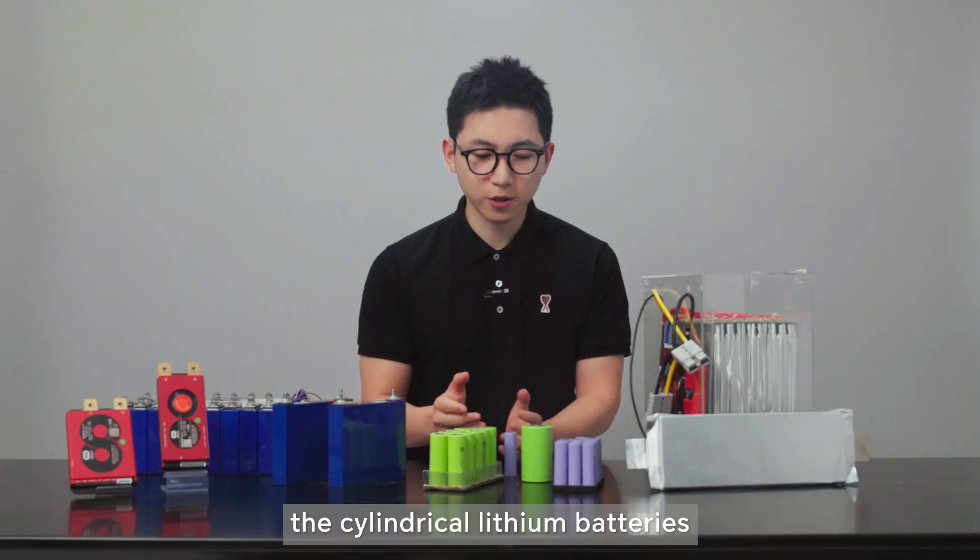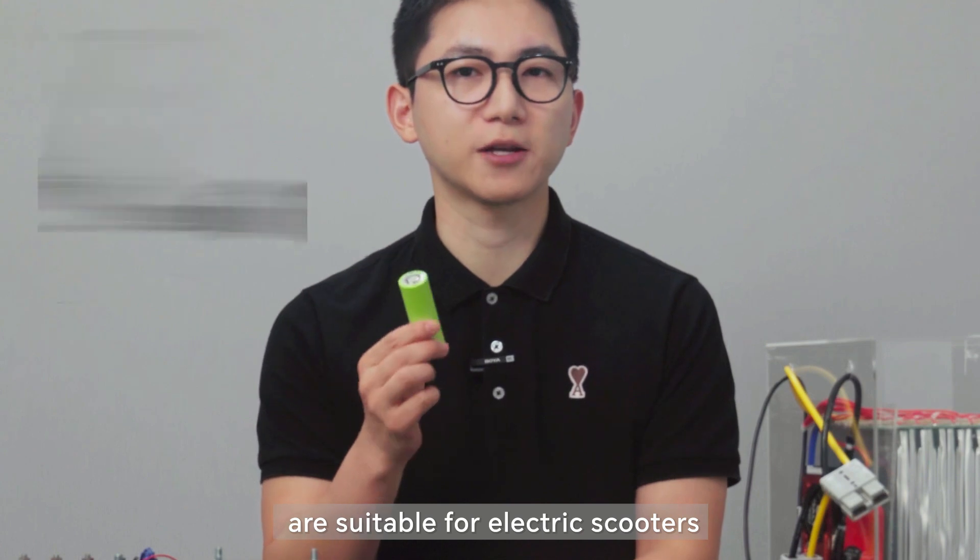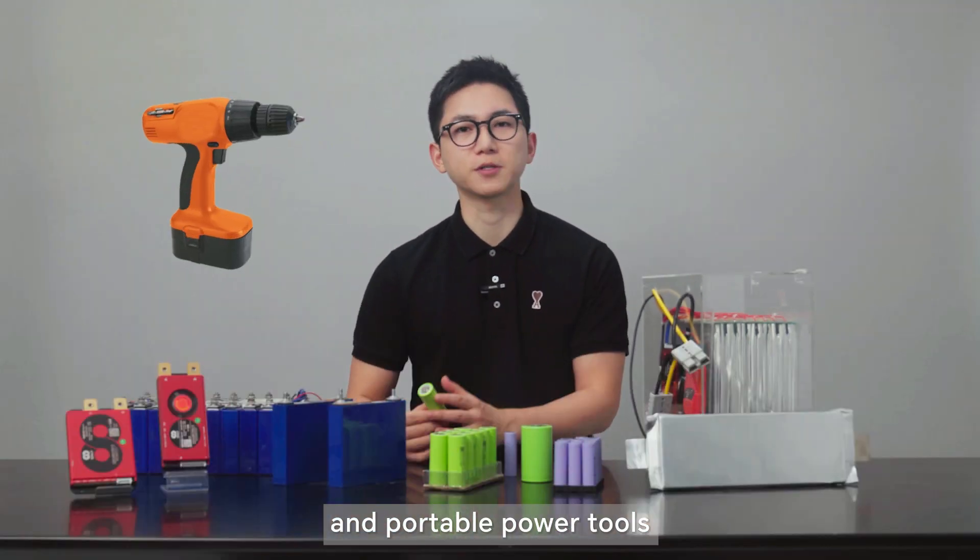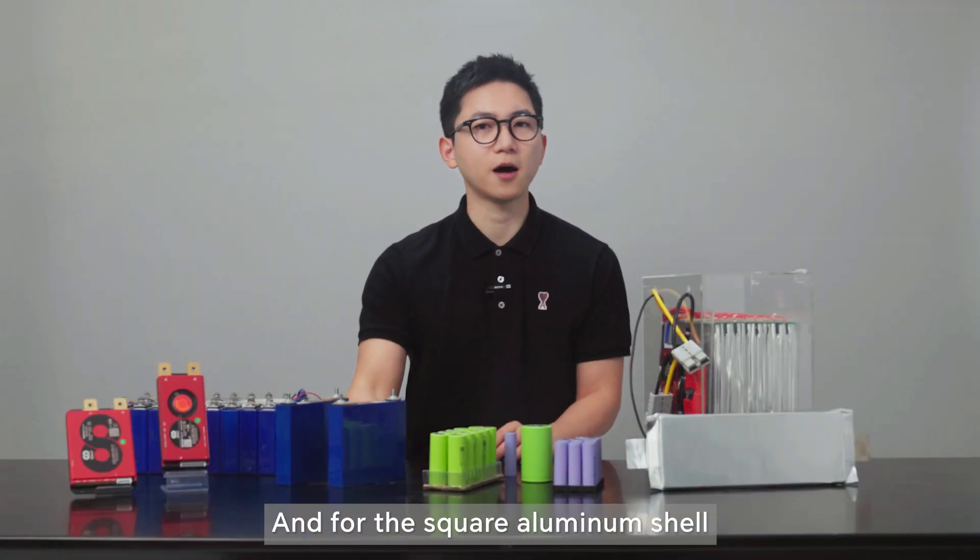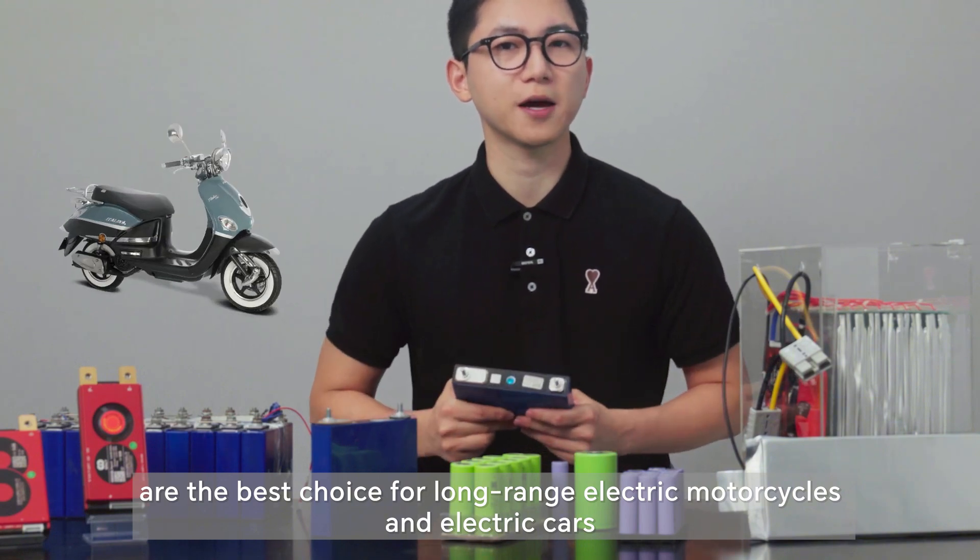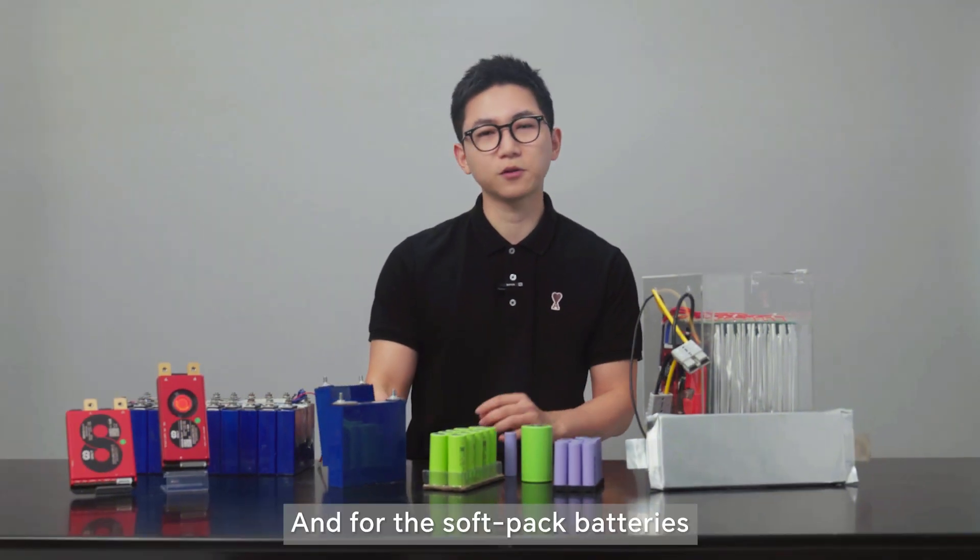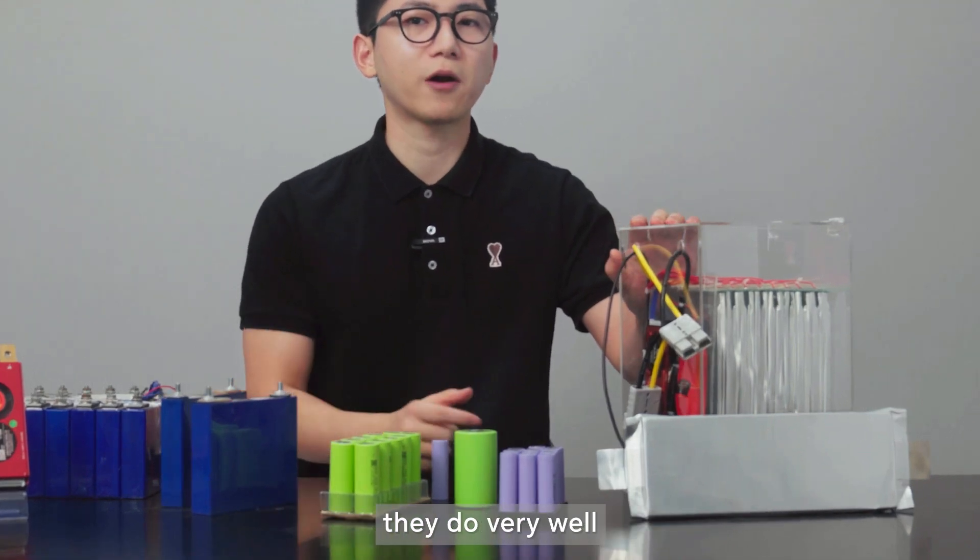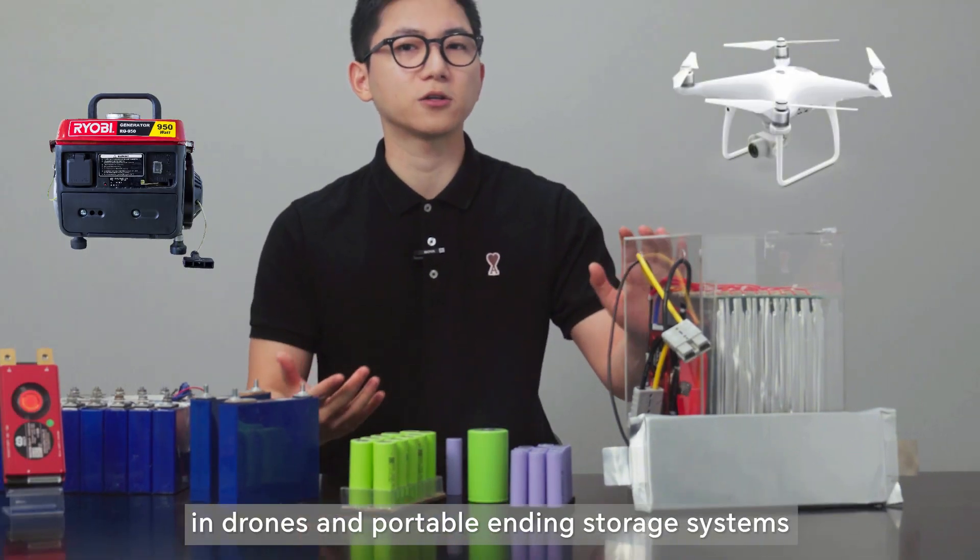So, let's sum it up. The cylindrical lithium batteries are suitable for electric scooters and portable power tools. The square aluminum shells are the best choice for long-range electric motorcycles and electric cars. And the soft pack batteries do very well in drones and portable energy storage systems.